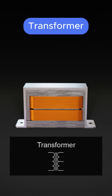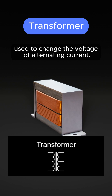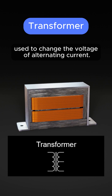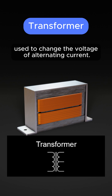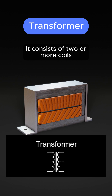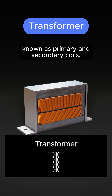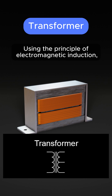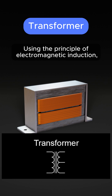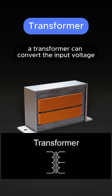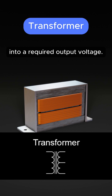Transformer. It is an electrical device used to change the voltage of alternating current. It consists of two or more coils, known as primary and secondary coils, which share a magnetic iron core. Using the principle of electromagnetic induction, a transformer can convert the input voltage into a required output voltage.